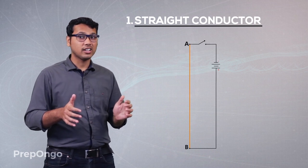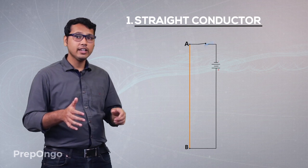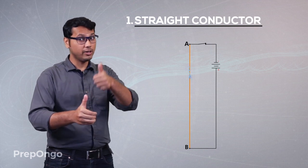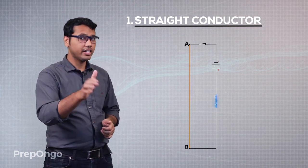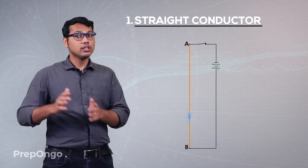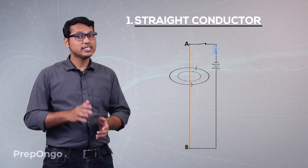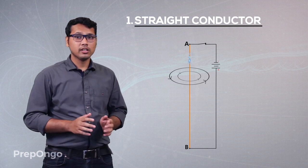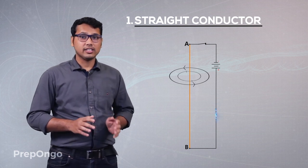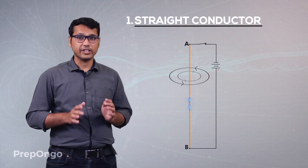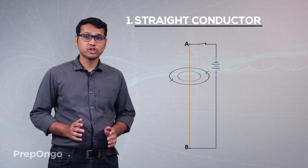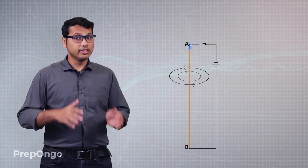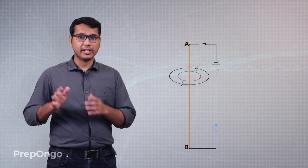If we look at this conductor, the current will be flowing in the upward direction when we switch on the battery. So let's hold it in our right hand — the thumb will point in the upward direction, and if we curl the fingers you will find that the magnetic field will be circular in shape. There will be some concentric circles formed around this wire, and their direction is given by the curling of the fingers.